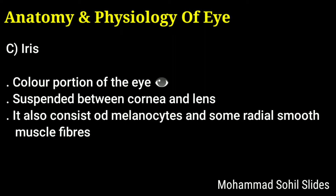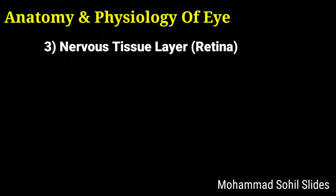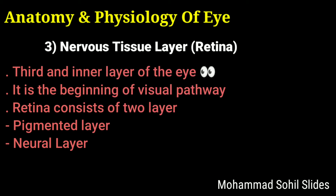Now coming to the third layer, the nervous tissue layer or retina. It is the third and inner layer of the eye or eyeball. It lies in the posterior three-quarters of the eye and is the beginning of the visual pathway. The optic disc is the site where the optic nerve exits the eyeball, and bundles of the optic nerve form the central retinal artery. The retina consists of two layers: the pigmented layer, which is a sheet of melanin-containing epithelial cells located between the choroid and the neural part of the retina; and the neural layer, which is a multi-layer outgrowth of the brain that processes visual data extensively before sending nerve impulses along axons that form the optic nerve.